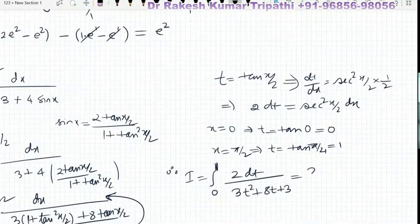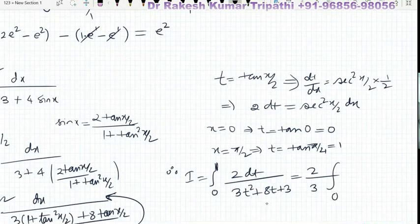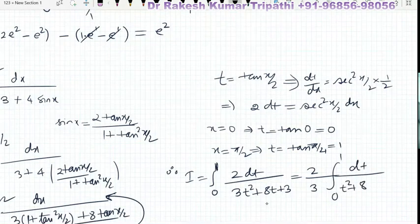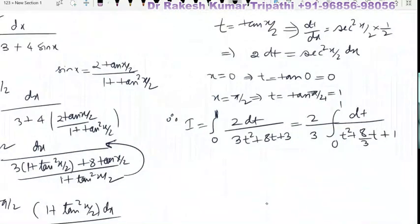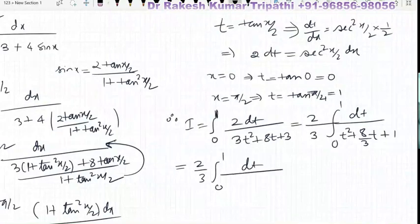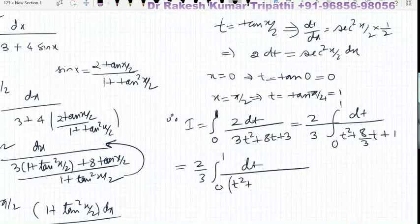Taking 2 and 3 as common factors outside, the integral becomes (2/3) × ∫ from 0 to 1 of dt upon (t² + (8/3)t + 1). Now we shall make the denominator a perfect square by completing the square.